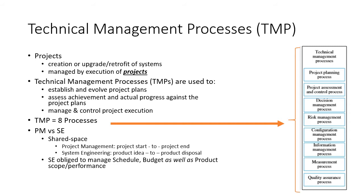All of the technical management processes talk about something called a project. The project is the way that we organize our thinking, information, and structure for the purpose of creating, upgrading, or retrofitting systems. The project is executed and managed. The technical management processes are used to develop project plans, assess achievement against those plans, and manage and control project execution. There are eight processes, and this video covers the information management process, third from the bottom.